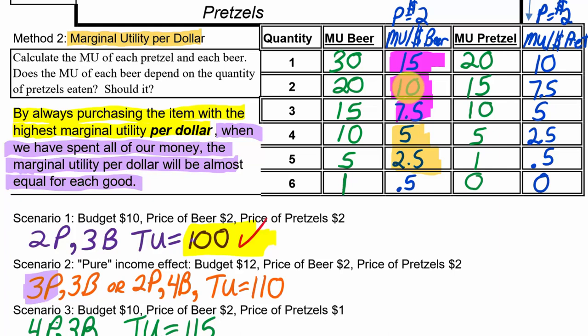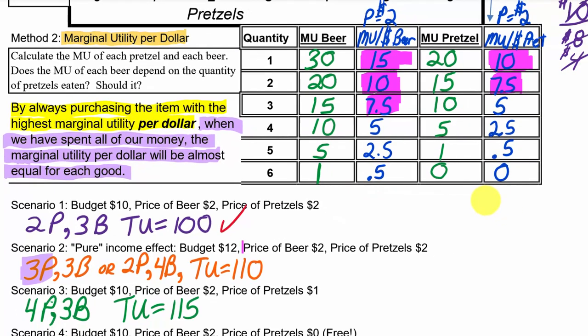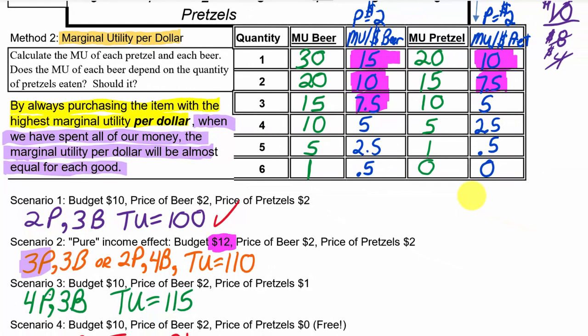This is a bit theoretical, but it helps us understand human behavior and it's important to understand why we're doing this process. Now let's talk about scenario two. We're going back to our solution for scenario one - three beers and two pretzels - because in scenario two, the only difference is they're giving us two more dollars. We're keeping the prices the same but giving us two more dollars.